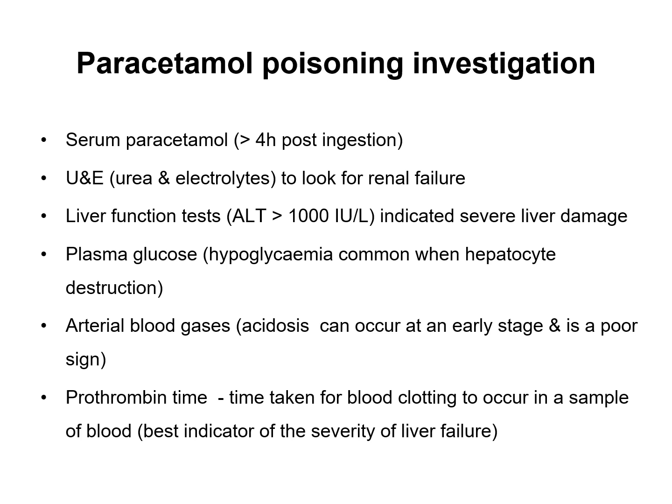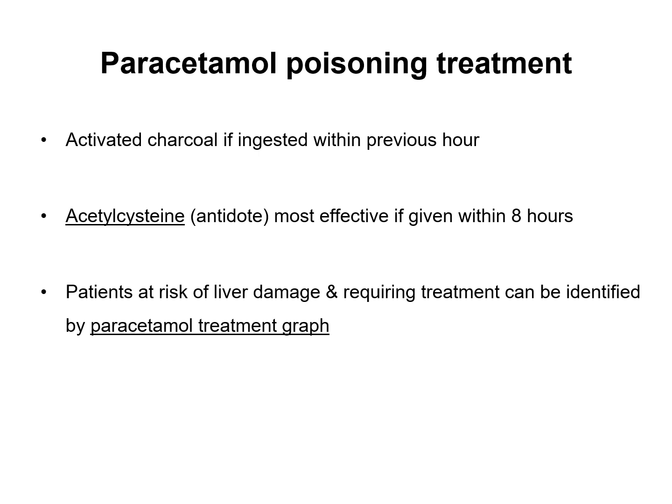Investigating paracetamol poisoning: serum paracetamol is measured at greater than four hours post-ingestion. Urea and electrolytes tests are conducted to look for renal failure; liver function tests such as ALT assess severity of liver damage; plasma glucose is checked as hypoglycaemia is common when liver cells are destroyed; arterial blood gases are measured as acidosis can occur early, which is a poor sign; and prothrombin time indicates how severe the liver failure is. Treatment includes activated charcoal if ingested within the previous hour, and acetylcysteine — the antidote — which is most effective if given within eight hours. Patients at risk can be identified using the paracetamol treatment graph.